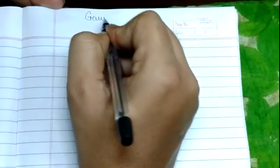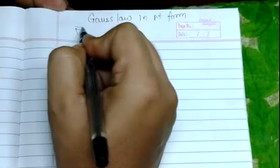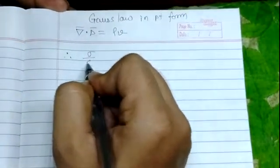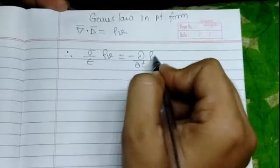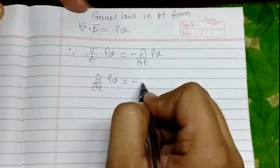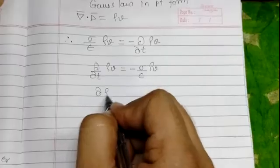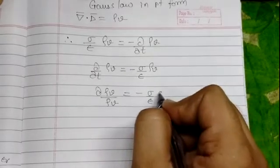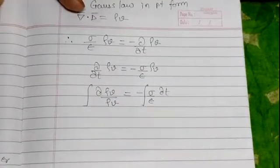As per Gauss's law in point form, del-bar dot D-bar equals rho-V. Therefore we can say that (sigma over epsilon) times rho-V equals minus del-rho-V by del-t. Rewriting: del-rho-V by del-t equals minus (sigma over epsilon) times rho-V. Separating variables: d-rho-V over rho-V equals minus (sigma over epsilon) times dt.